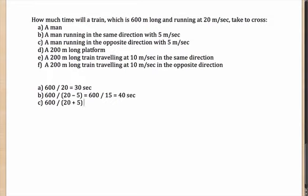How does this change if instead of the same direction they are running in opposite directions? The man and train are now moving toward each other. The only difference is in the relative speed: it will now be 20 plus 5, because the two bodies are moving in opposite directions. So this becomes 600 divided by 25, which gives 24 seconds.